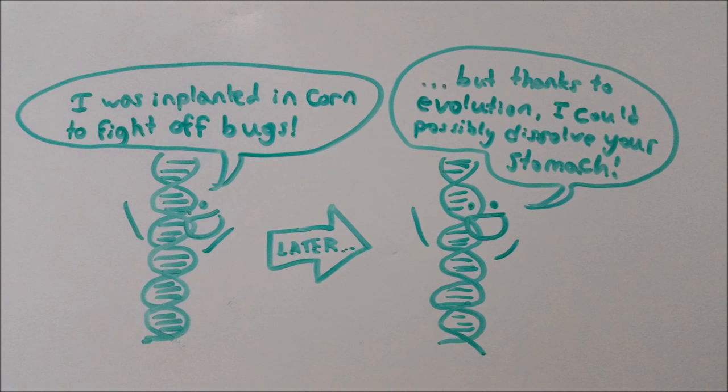Because evolution is happening all the time, it's very probable that the genes scientists use in GM crops could change over time and cause them to behave in ways we didn't mean them to.